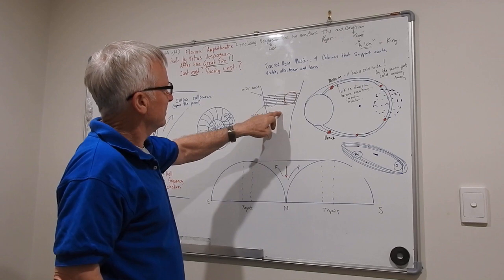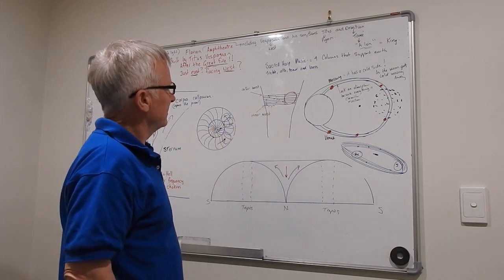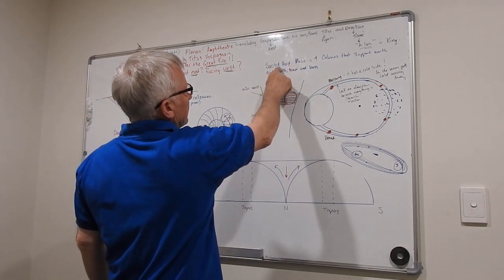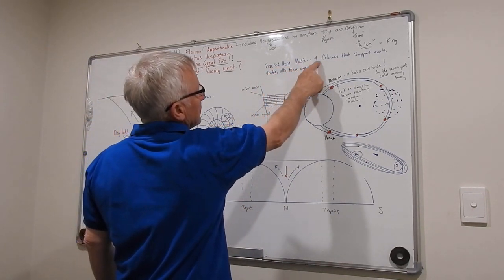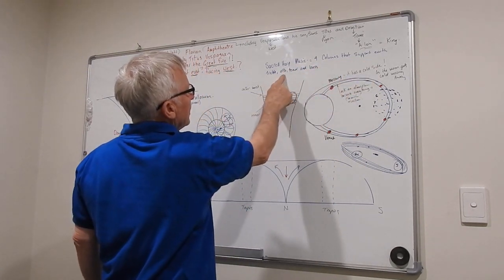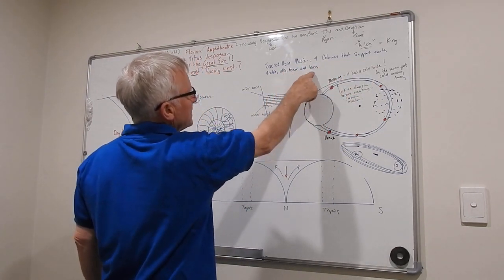Music. All about music. Sacred Heart. There's something I've found. Sacred Heart music. Four columns that support earth: Treble, Alto, Tenor, and Bass. Well that explains everything.